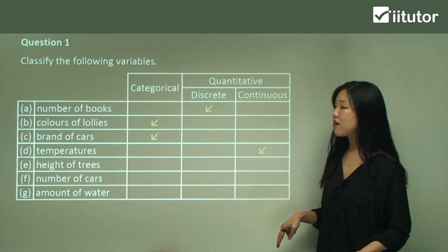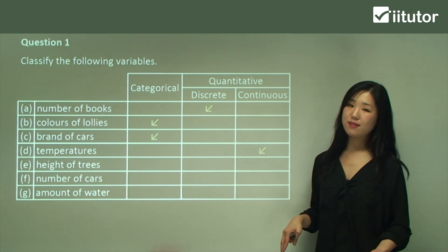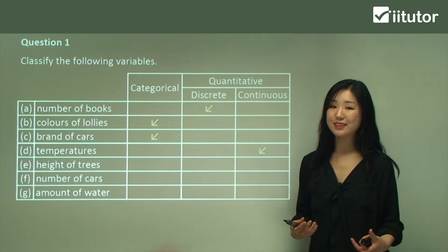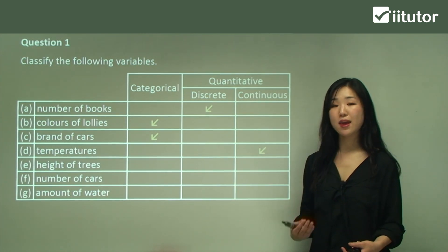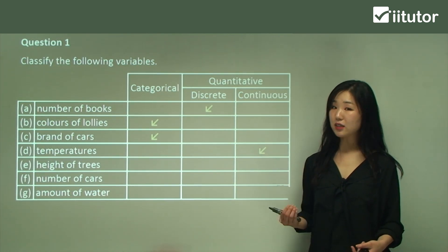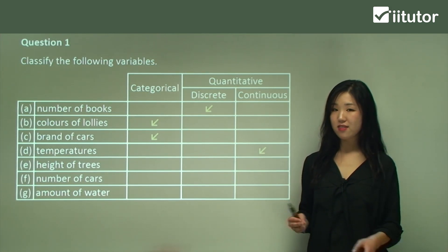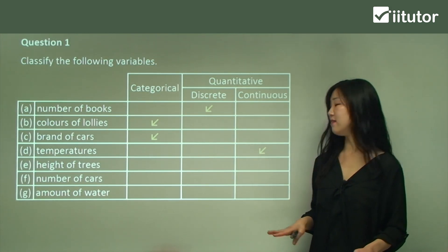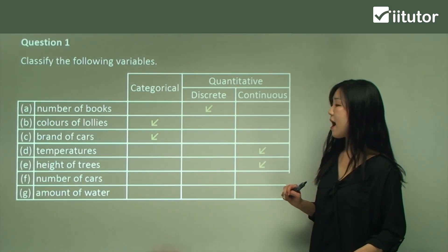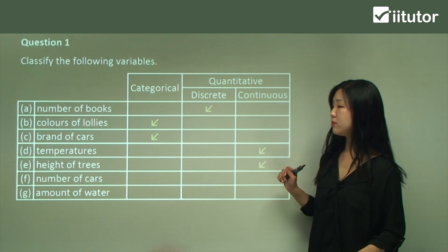Now E — height of trees. Height of trees is a quantity, but ask yourself: is it countable? Can we count height? That doesn't make sense. So it must be a continuous variable.